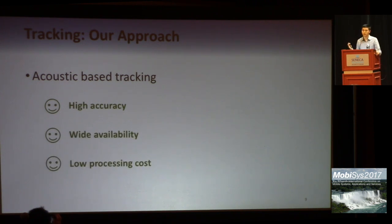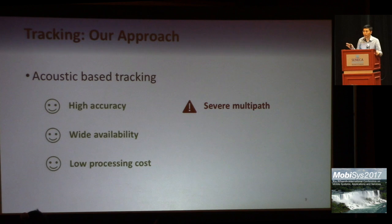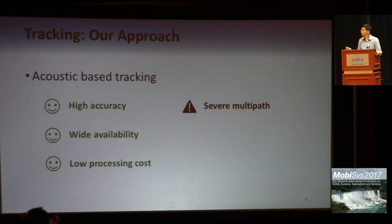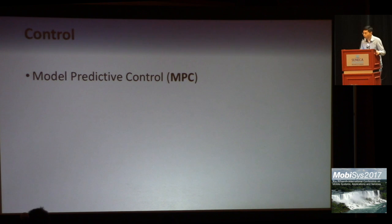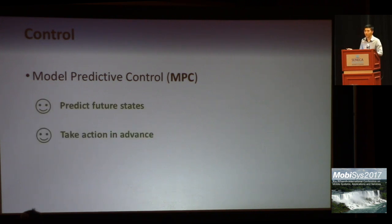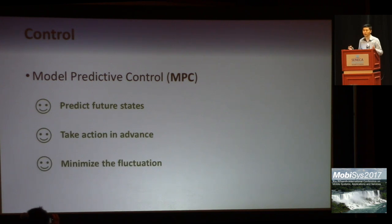We also need to solve some new challenges in our application. First, multipath generated by reflections and loss in the indoor environment is a severe problem with significant impact on system performance. Also, the strong propeller noise of the drone may affect the tracking accuracy. For control, we develop our controller based on the MPC framework. The key idea is to leverage prediction and take action in advance. This is helpful to minimize fluctuation of following distance and orientation and provide stable and smooth video.